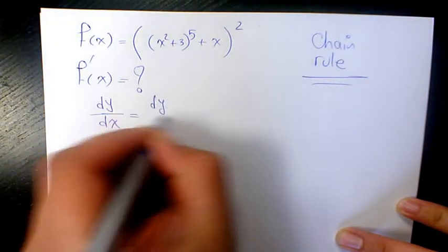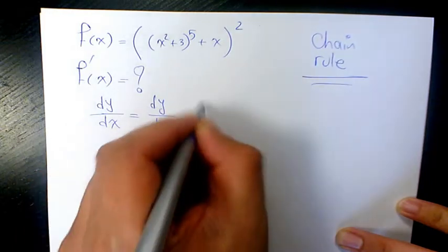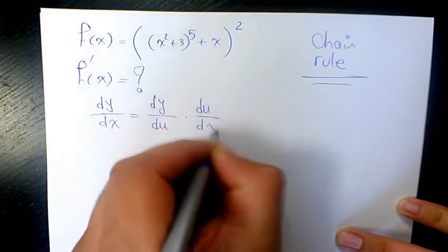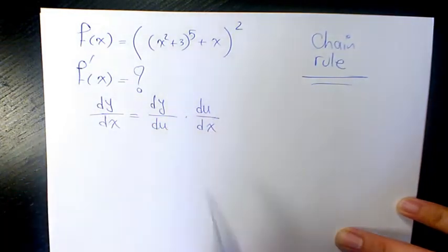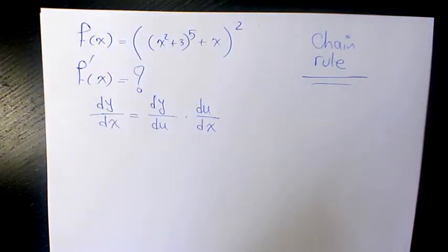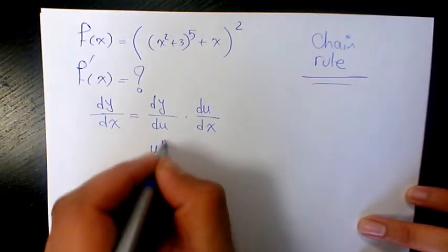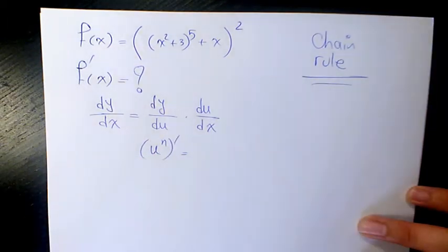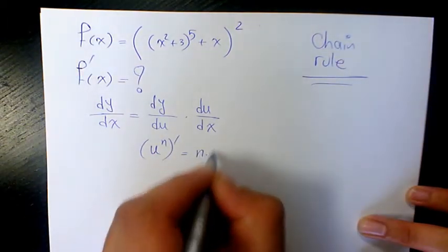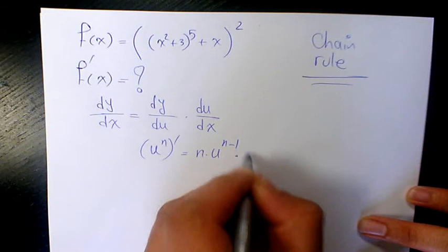then you can say the derivative of y with respect to u times the derivative of u with respect to x is going to equal the derivative of y with respect to x. For example, if you have u to the power of n and you want to find the derivative, it's going to be n times u^(n-1) times u'.